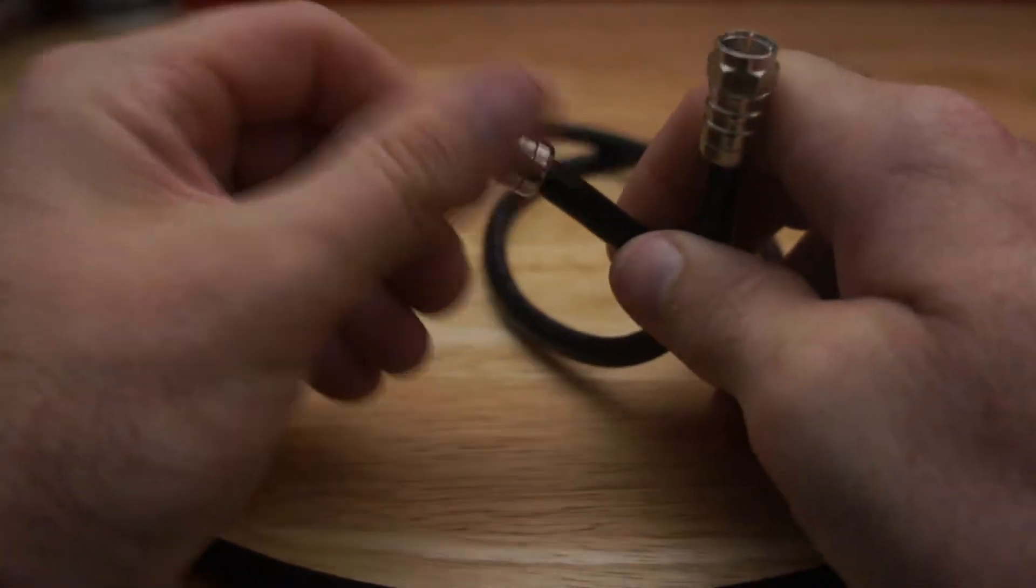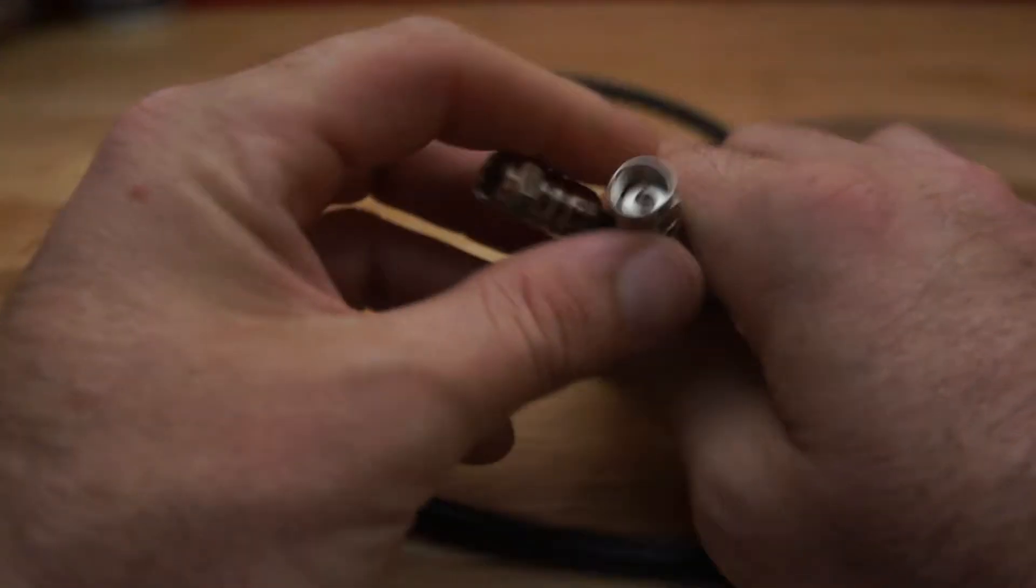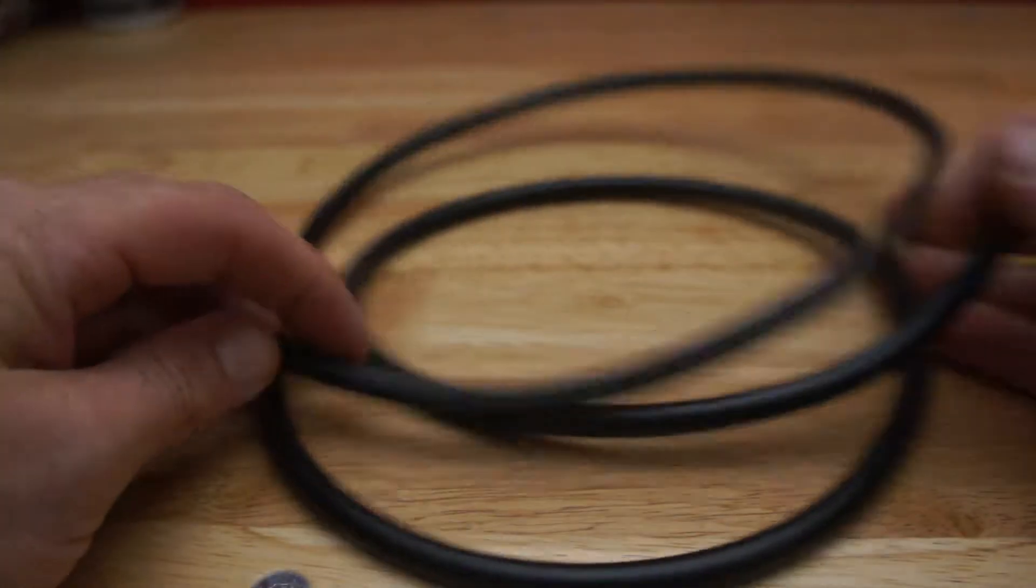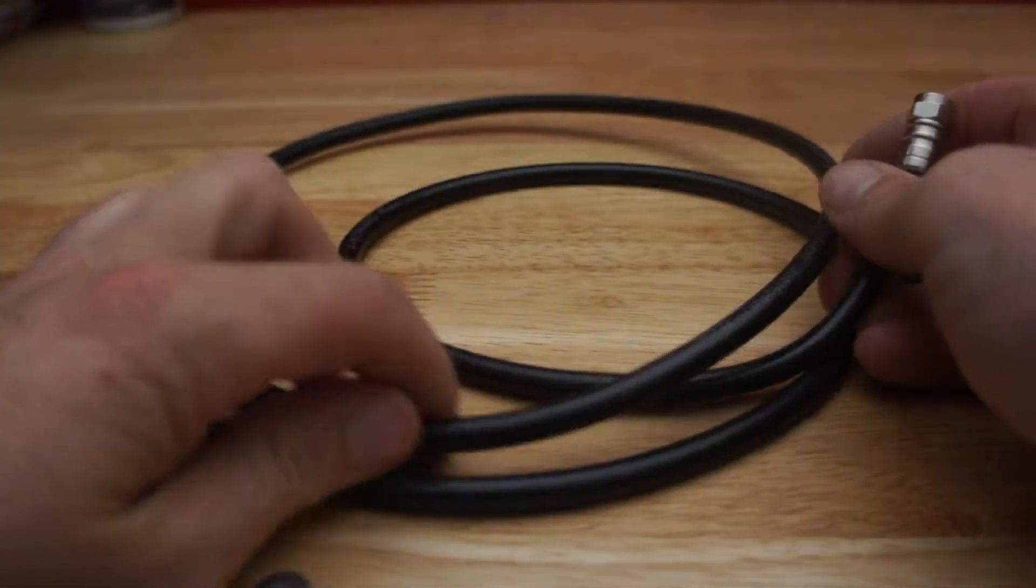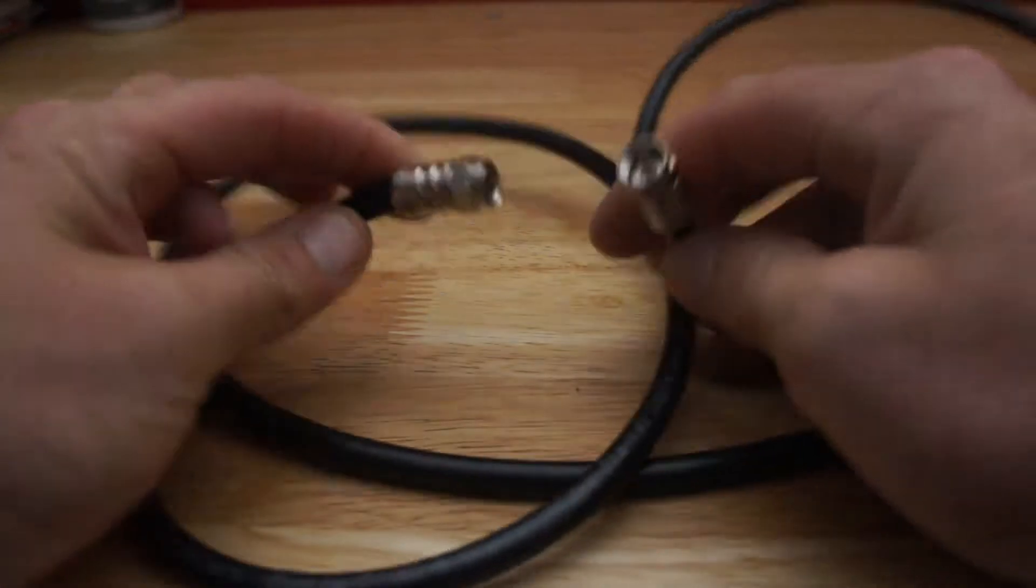F2F means it has screw-on F-type connections on both ends. It's a 1.5 meter quad shield high quality coax cable. These connectors are fantastic.